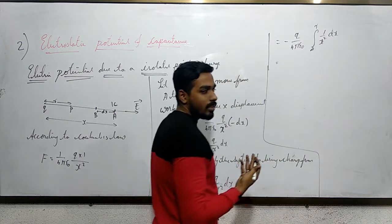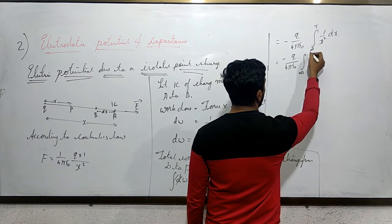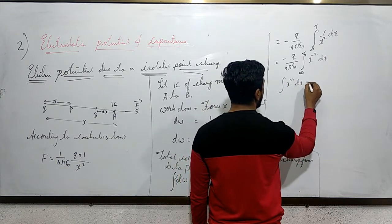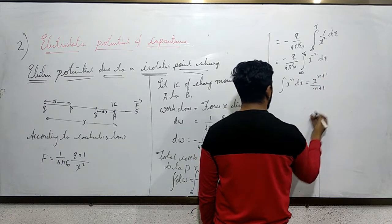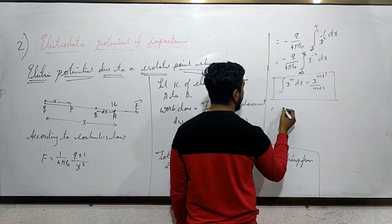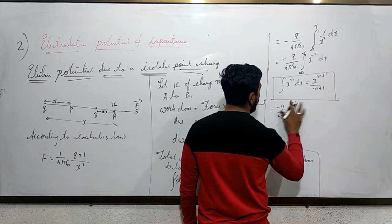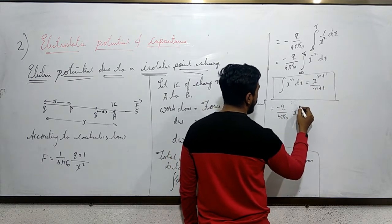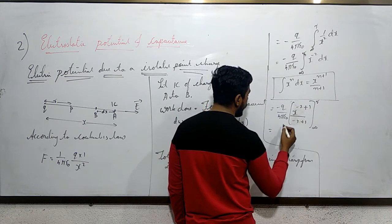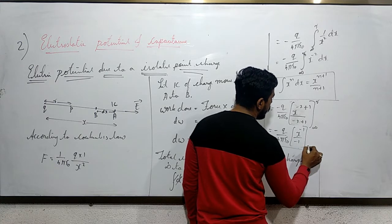Taking the constants out: -(q/4πε₀) times the integral of x⁻² dx from infinity to r. Using the standard integration formula ∫xⁿ dx = xⁿ⁺¹/(n+1), we get -(q/4πε₀) times [x⁻¹/(−1)] from infinity to r, which equals -(q/4πε₀) times [1/(−x)] from infinity to r.